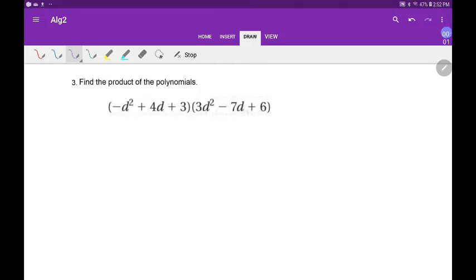Find the product of the polynomials. We're going to go one at a time: negative d squared times that, negative d squared times that, negative d squared times that. We're going to add exponents, because if you recall, common base means I add exponents. Let's see what we get.